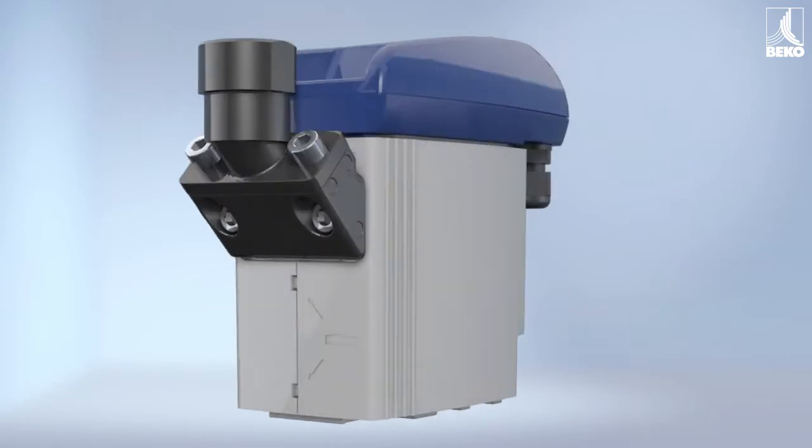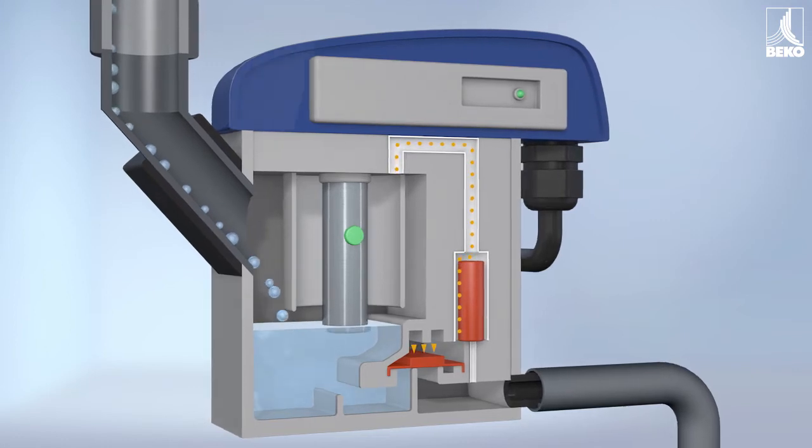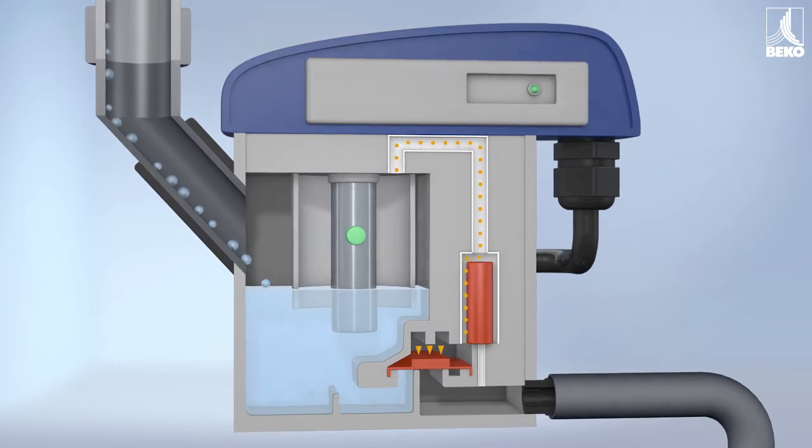Adapted to the amount of condensate and without compressed air loss, condensate flows in via the feed line whilst air pressure from the vent pipe keeps the membrane closed from above.